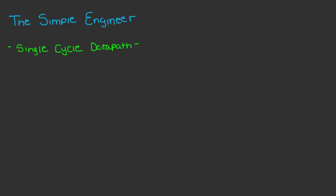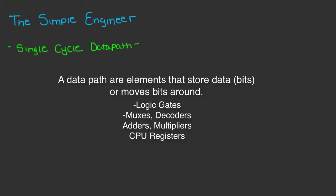Welcome to another video by the Simple Engineer. Today we are continuing our series on computer architecture, talking about the single cycle design. The single cycle datapath is a series of stages that execute sequentially within the CPU, where only one instruction can be executed at any given time or any given clock cycle.